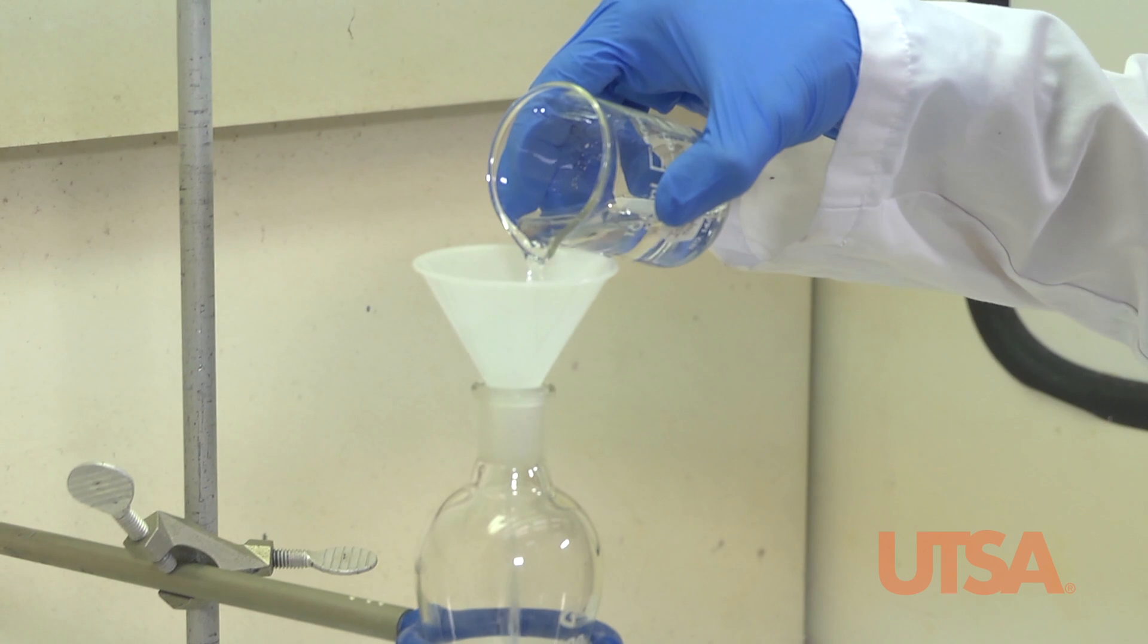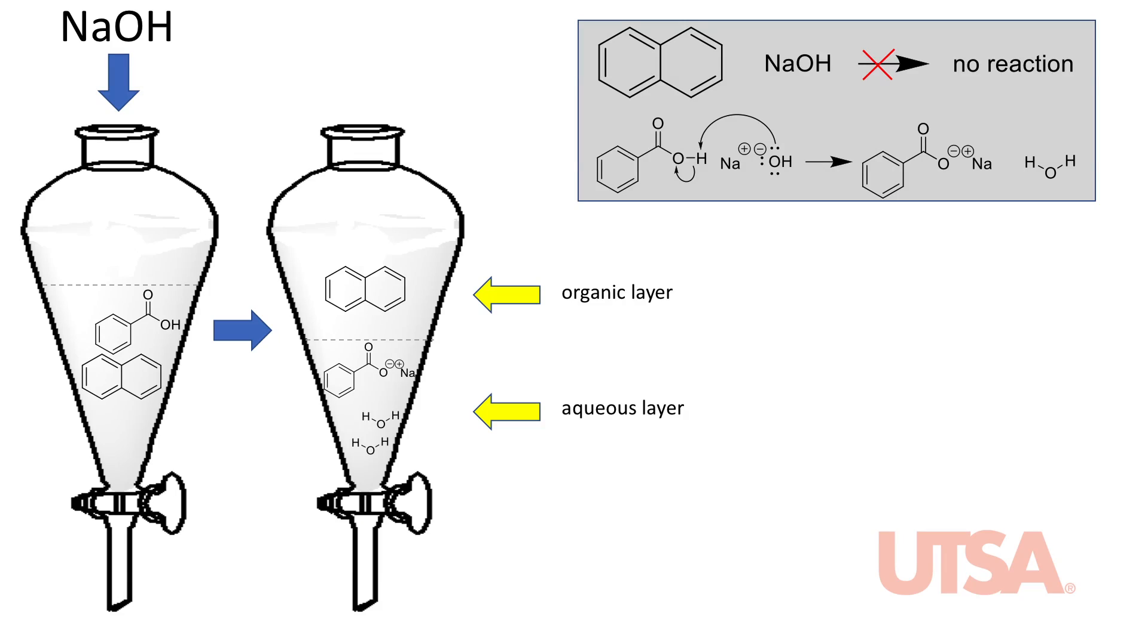Upon each addition of 10% sodium hydroxide, we will shake, vent, and then drain into the labeled beaker. Sodium hydroxide was selected as the extracting solvent because it will deprotonate the carboxylic acid, forming a salt that is soluble in the aqueous layer. The two separated layers are now immiscible, and sodium hydroxide is present in the aqueous layer.